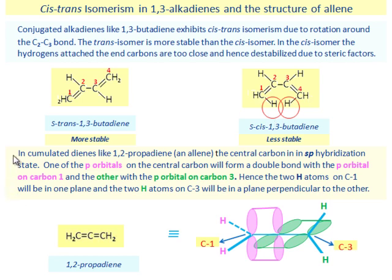In accumulated dienes like 1,2-propadiene, the central carbon is in sp hybridization state. One of the p orbitals on the central carbon will form a double bond with the p orbital on carbon-1. The other p orbital will form the double bond with p orbitals on carbon-3. Hence, the two hydrogen atoms on carbon-1 will be in one plane and the two hydrogen atoms on carbon-3 will be in a plane perpendicular to the other.